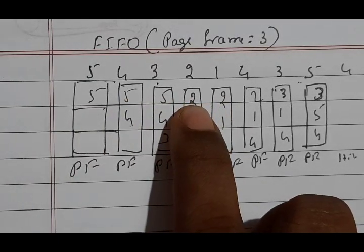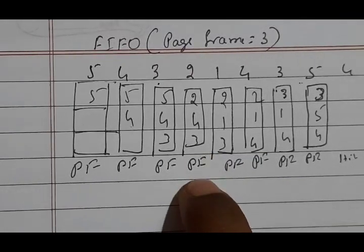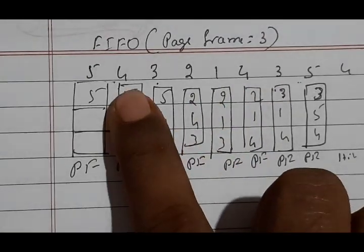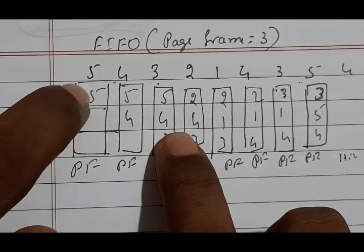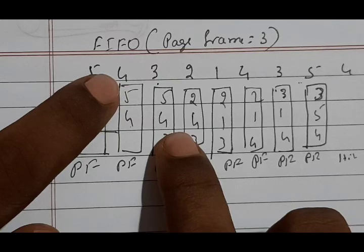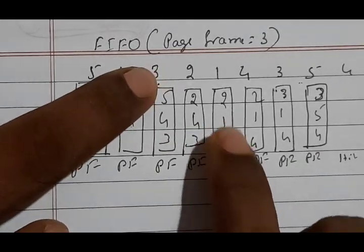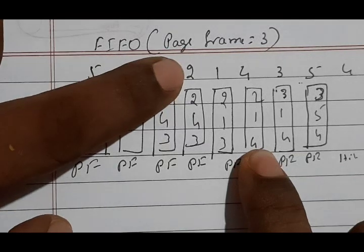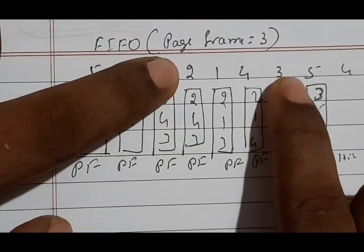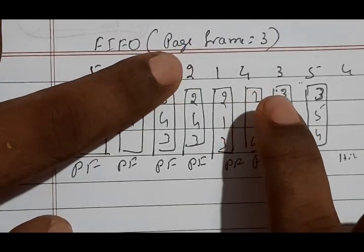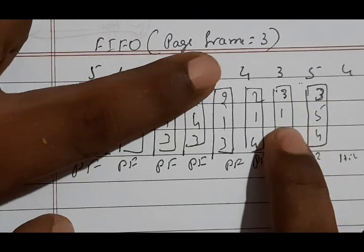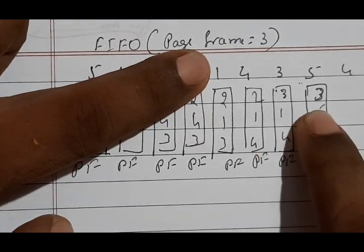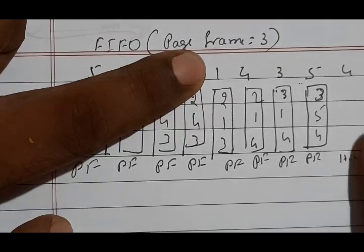Next, page 1 is not present, page fault occurs. After 5, the next oldest is 4, so replace 4 with 1. Next, page 4 is not present — in place of 3, replace with 4. Next, page 3 is not present — in place of 2, replace with 3. Next, page 5 is not present — in place of 1, replace with 5. Next, page 4 is already present — no replacement.